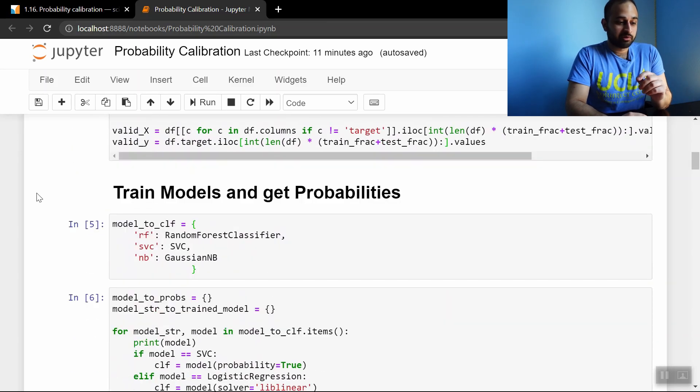But basically the first thing we do is we're going to train a couple of different models: a random forest, a support vector classifier, and a naive Bayes classifier.